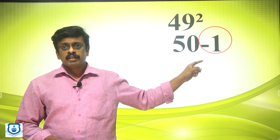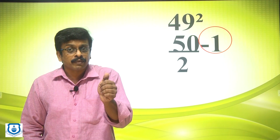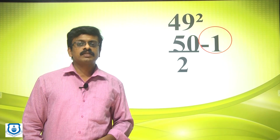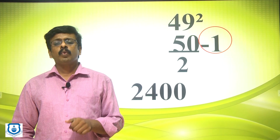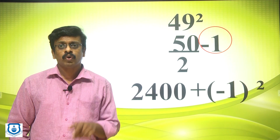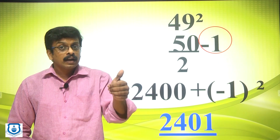Let us discuss 49 squared. You know that 49 is actually 50 minus 1, and you need to focus on that minus 1 — it is very important. Using the Half 50 Method, you take half of 50, which is 25. Then 25 minus 1 gives 24, so we have 2400. Now add minus 1 squared, which is 1, to get the final answer: 2401.